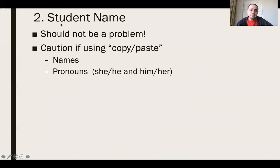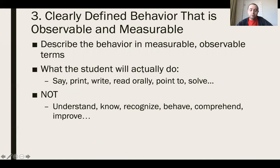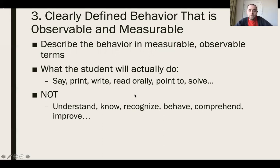For the student's name, always double-check it and verify your pronouns are correct — copy-and-paste errors are easy to make. For the clearly defined behavior, think of our friend Albert Einstein always observing things — the behavior must be observable and measurable. Examples of good behavior terms: say, print, write, read. Terms to avoid: understand, know, recognize, behave, improve. My definition of improvement could differ from yours, so it must actually be observable.